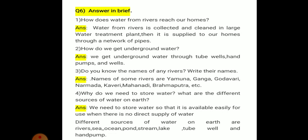Underground water जो होता है, जमीन के नीचे जो पानी रहती है, उससे हम कैसे मिलता है? Tube wells से, hand pumps से, and wells से.